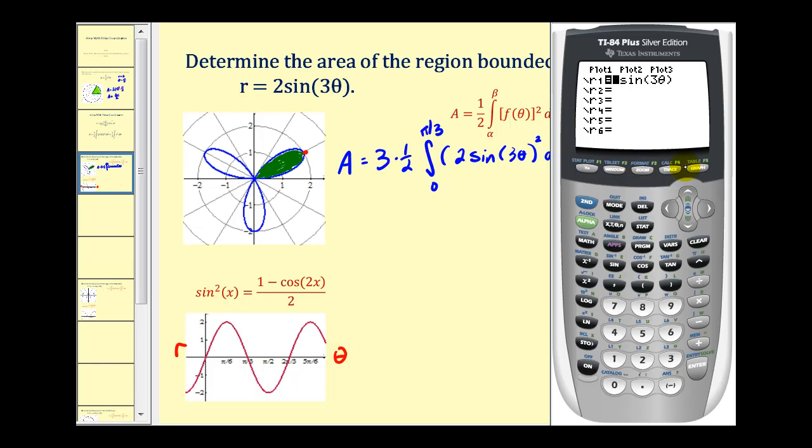And before we graph this, let's go ahead and press our window key. And notice theta goes from zero to 360. That's because we're in degree mode. And I set theta step to 1.5. Let's go ahead and press zoom five for z square. This gives us a nice graph of that polar equation. And now if we press the trace key, we can see exactly what portion of the graph is traced, as theta starts to increase. So right now theta is equal to zero. And you can see as it increases, it's tracing out this piece of the leaf.